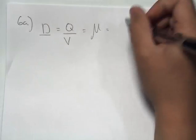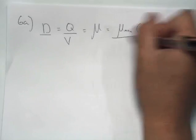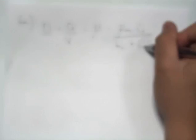We know that the dilution rate is equal to the specific growth rate, which is equal to the maximum specific growth rate times the concentration of substrate over the Monod constant plus the concentration of substrate.